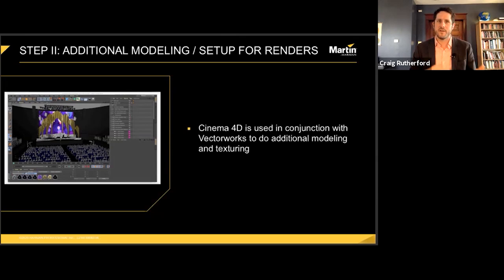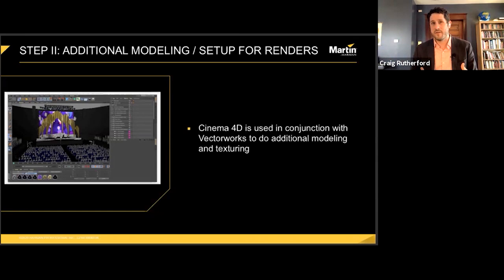There's some overlap between Cinema and Vectorworks in terms of use case. Sometimes I find things easier to model in Cinema than in Vectorworks — that's really true of anything that has any sort of complex intersecting curves. So I typically have some back and forth between the two. I also like to do texturing in Cinema, because frankly I find the texturing in Vectorworks to be a little more difficult and, to use a technical term, wonky.